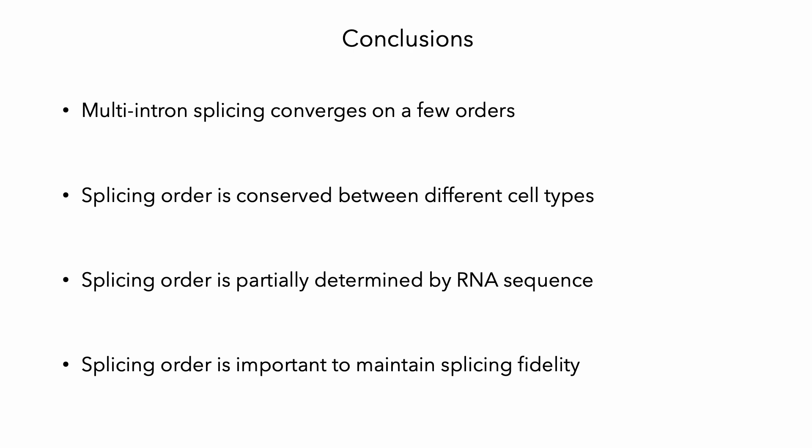In conclusion, today I've shown you that multi-intron splicing tends to converge on a few different orders and that splicing order is conserved between different cell types and is partially determined by RNA sequence. Lastly, we found that splicing order is really important to maintain splicing fidelity.